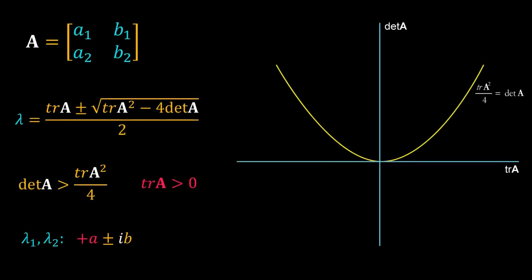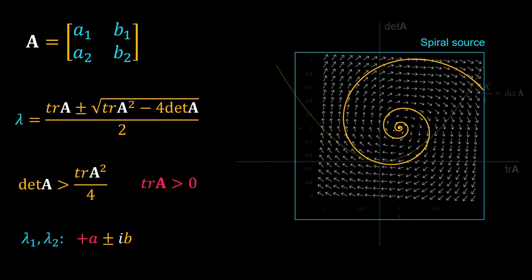Just the opposite happens when trace(A) is positive: the real part of the complex eigenvalue is positive, so the steady state is unstable. An oscillation with increasing amplitude takes the system away from the steady state. Here also the trajectory is spiral, but it starts at the steady state and fans out. So we call it a spiral source.